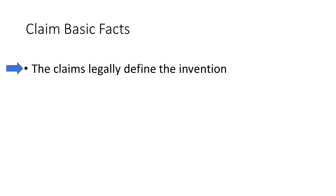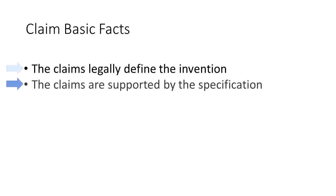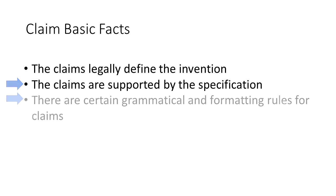First let's go over some basic claim facts. The claims legally define the invention. You can say whatever you want in the written description, but when it comes to determining if someone is using your invention without your permission — which is called infringing — the first place one looks is the claims of the patent in question. If we need to know what a claim term means, we may look to the specification or written description. There are also grammatical and formatting rules for claims; for example, every claim is numbered and every claim ends in a period.